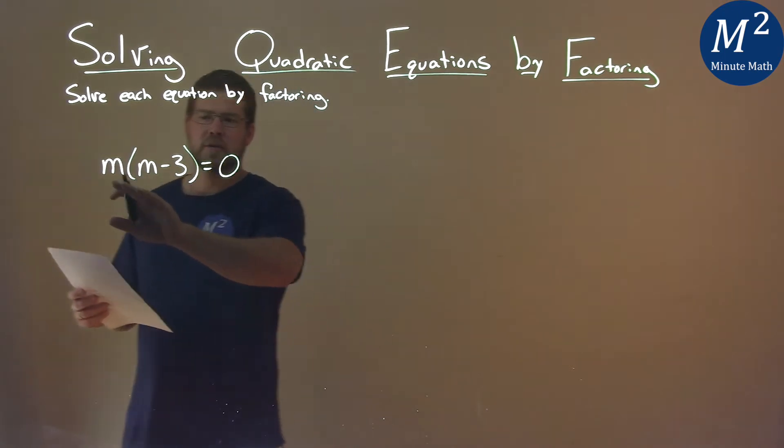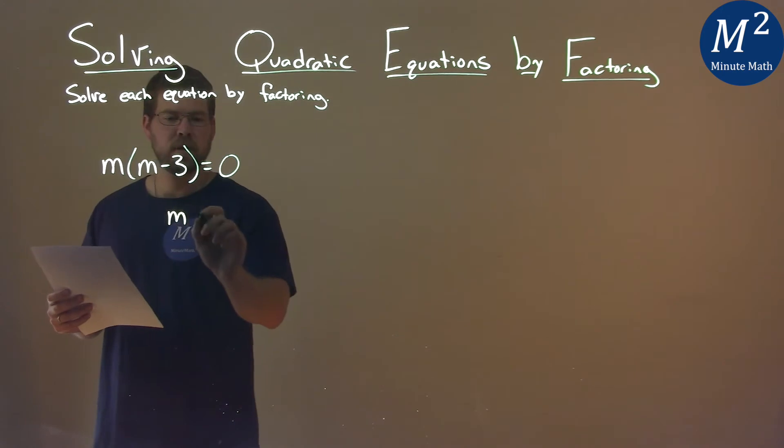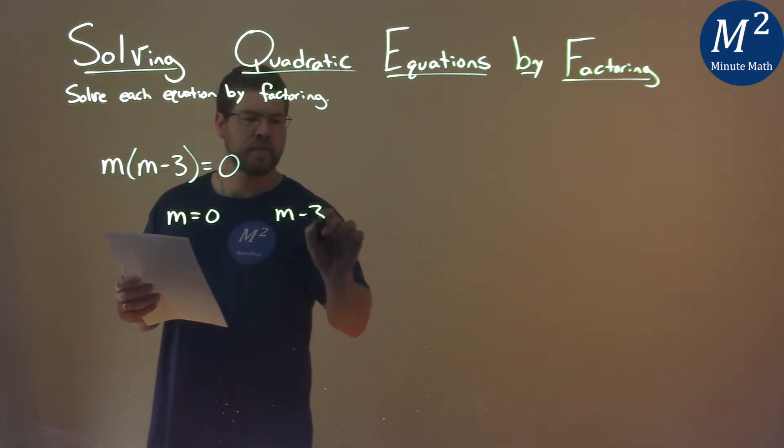So what we have to do is then take our two parts and set each part equal to 0. So the first part, just being that m, set it equal to 0. And then the m minus 3, we also set to 0.